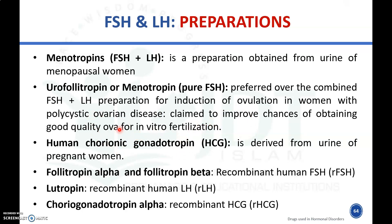Human chorionic gonadotropin (HCG) is derived from the urine of pregnant women and is used as an FSH and LH preparation. Other preparations include follitropin alpha and follitropin beta, which are recombinant human follicular stimulating hormones, lutropin alfa, which is a recombinant luteinizing hormone, and choriogonadotropin alfa, which is a recombinant HCG preparation.